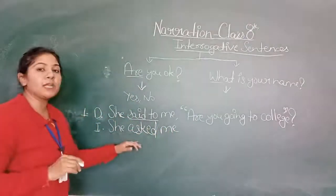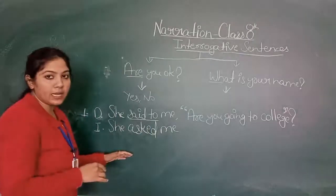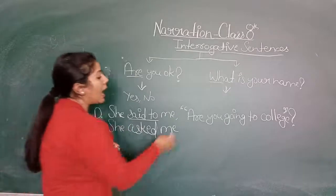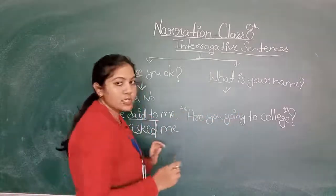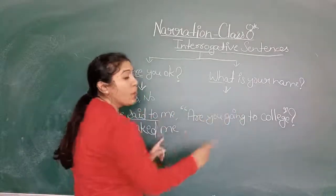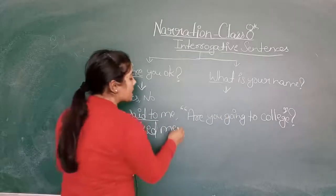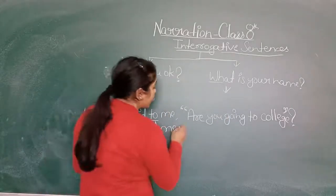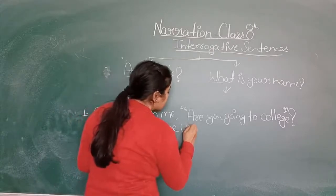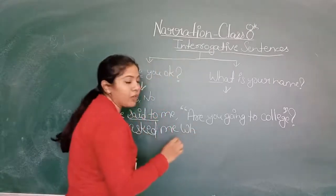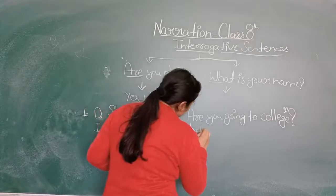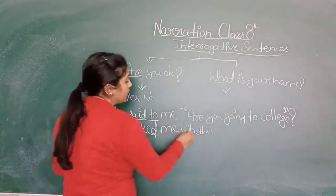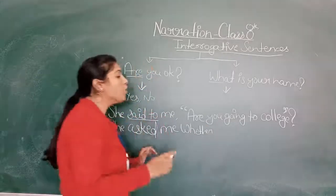We know how to change 'said to' — we have been using 'told' for simple sentences. Here 'said to' changes to 'asked.' For simple sentences we were removing inverted commas and using 'that.' But here, instead of 'that,' we use 'whether' or 'if.' So: 'She asked me whether — are you going to college?'